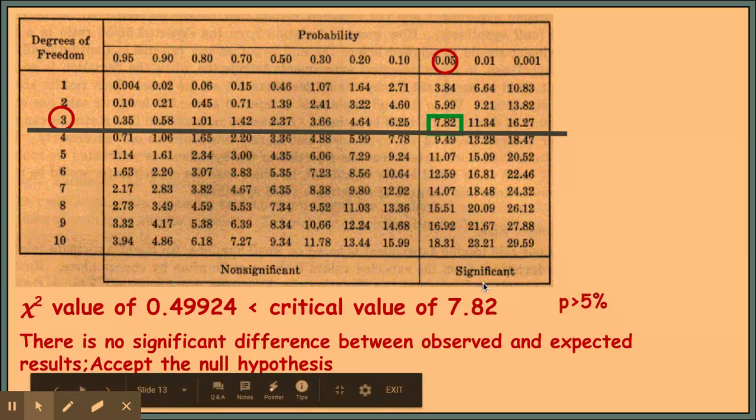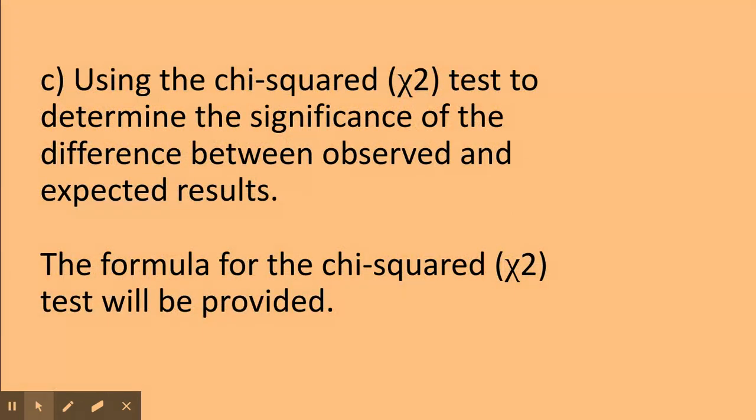So there we have chi-squared. We've looked at a monohybrid cross in part one and a dihybrid cross in part two. Guys, good luck with your exams, and please remember when doing chi-squared to make sure you include those four points.